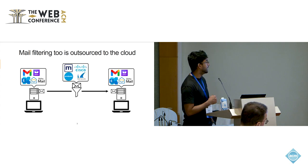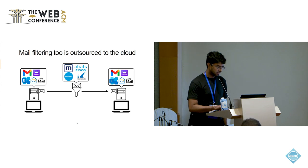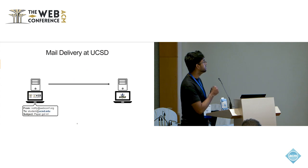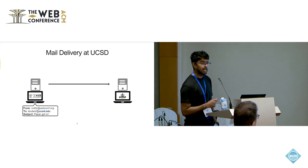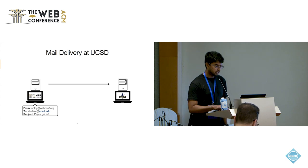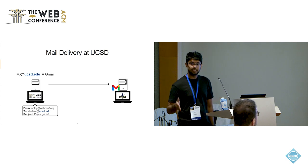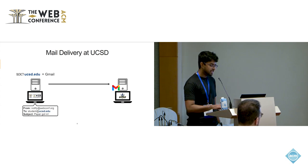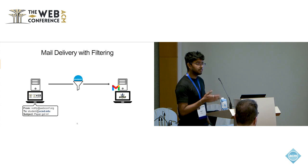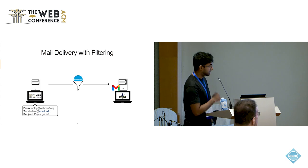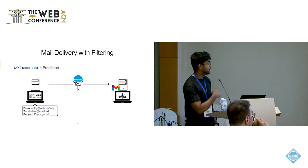You have a number of different vendors like Mimecast, Proofpoint, Cisco, Barracuda who do email filtering for you. Let's look at a concrete example of how mail delivery works at UCSD. If you want to send an email to some user at UCSD from a sending server like webconf.org, the first thing the sending server would do is query a DNS record — in particular, the MX record for UCSD.edu. It would point to Gmail, and then your email gets sent across to Gmail. But now let's say UCSD wants to set up email filtering using Proofpoint. Now the MX record would point to Proofpoint, and the email would go to Proofpoint, get filtered, and then go to the final destination, which is Gmail.